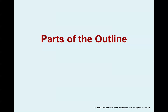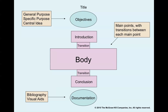Let's look at the different parts of the outline. This visual representation shows what an outline should look like. It starts with the title at the top, then the general purpose, specific purpose, and central idea. Next is the introduction, followed by a transition into the body. The body has main points with transitions between each one, linked to the conclusion by a transition. At the bottom are documentation, the bibliography, and a list of visual aids.